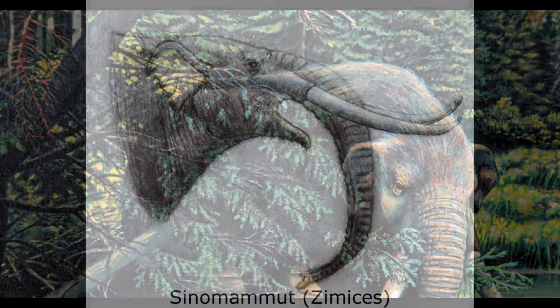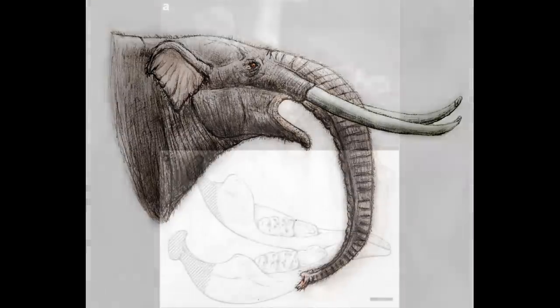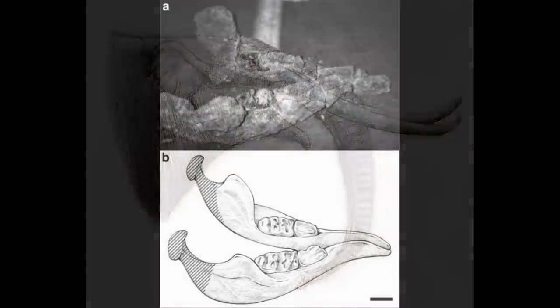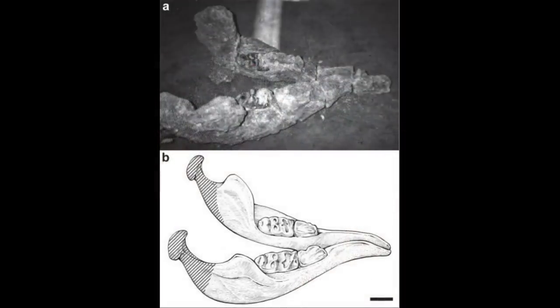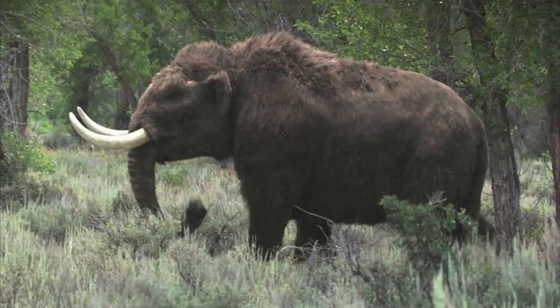Another Asian Mammutid was the genus Sinomammut, from the late Miocene of Gansu Province, China, approximately 12 to 11 million years ago. It was known from a single fragmentary mandible found in the 1990s; however, most of the specimen has been lost, leaving only the right ramus and an in-situ photograph of the mandible. This was originally thought to belong to a Gomphothere, but analysis revealed it to actually be a Mammutid that was a sister group to the well-known genus Mammut.